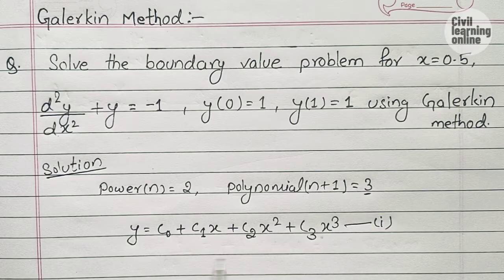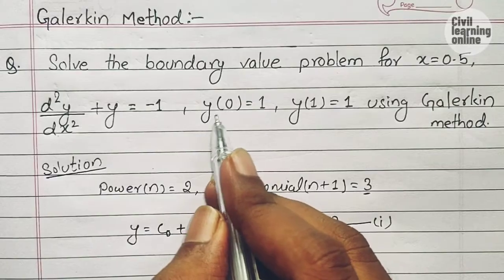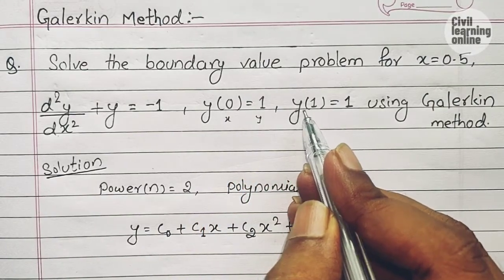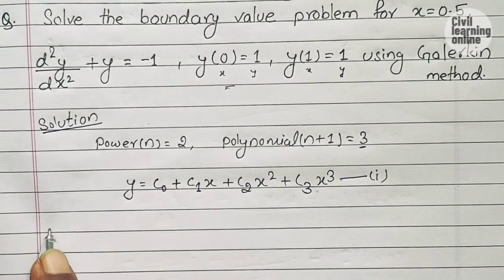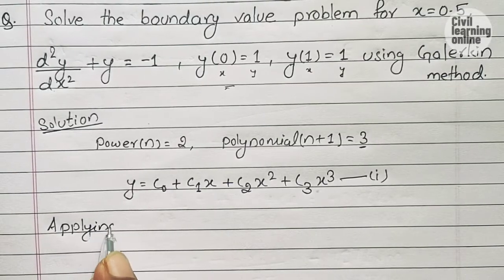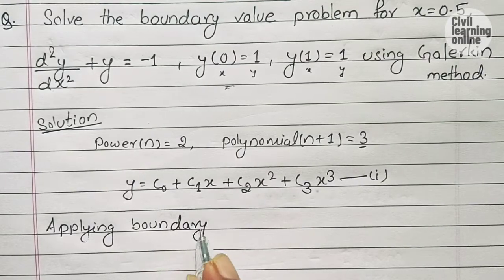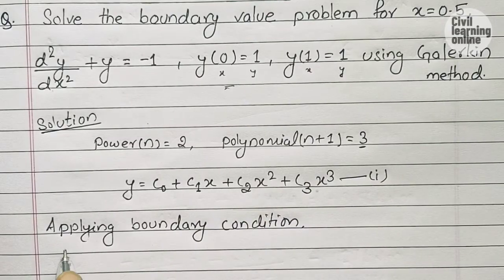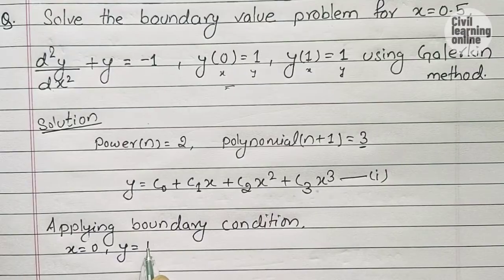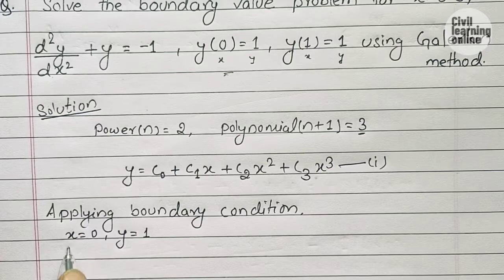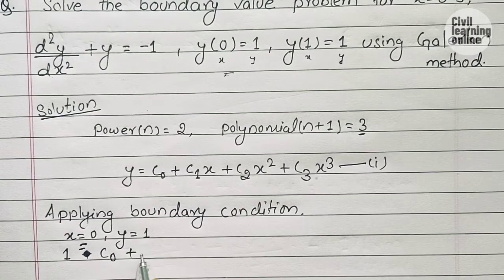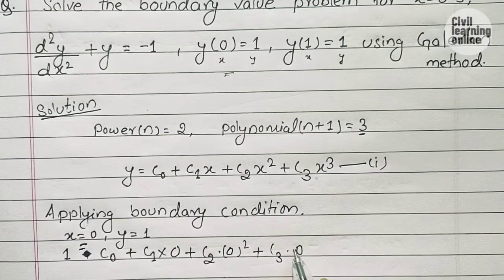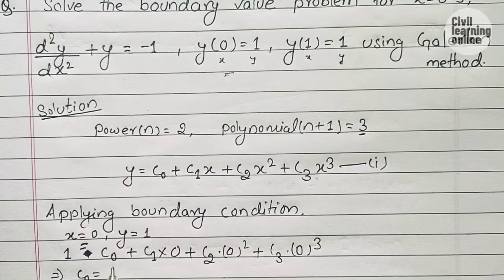Let this be equation 1. Now we apply the boundary conditions to equation 1. For the first boundary condition, x = 0 and y = 1: substituting gives 1 = c₀ + c₁(0) + c₂(0²) + c₃(0³). From here we get c₀ = 1.